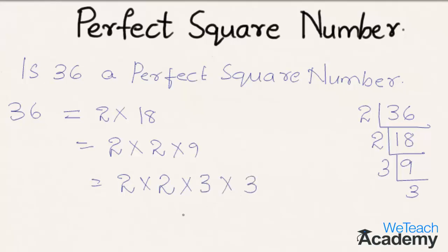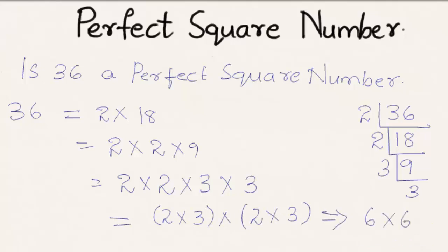So this can be written as 2 into 3 into 2 into 3. So we get this as 6 into 6, that is equal to 6 squared.